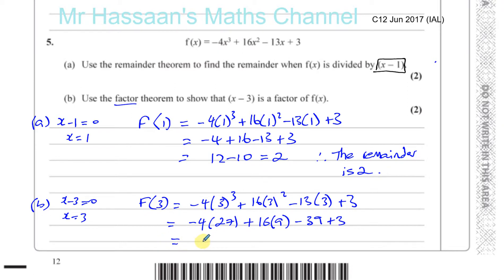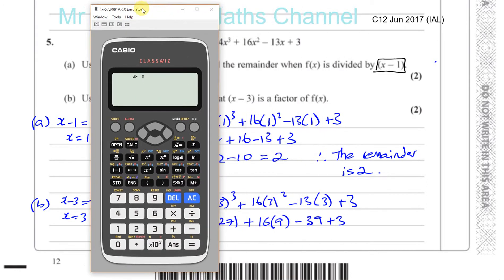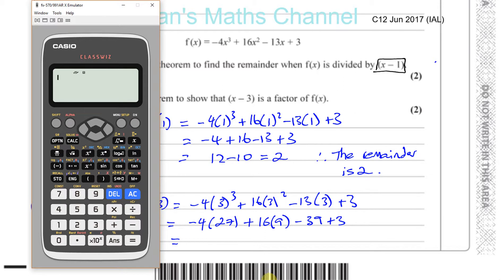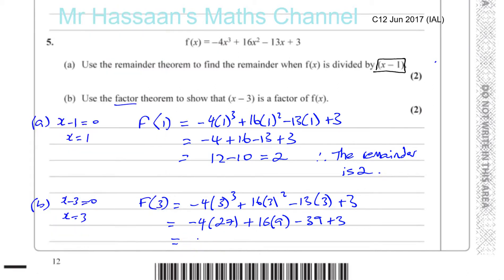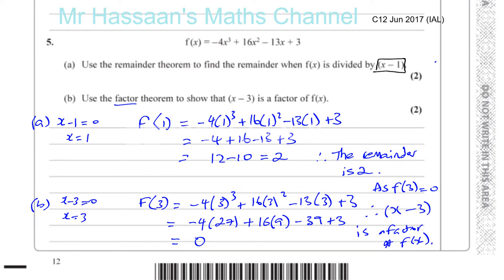Now we can just put this on a calculator if we wanted to, because we can use a calculator for this. So we have minus 4 times 27, plus 16 times 9, minus 39, and plus 3. And we should get 0, which we do. So therefore, as f(3) is equal to 0, therefore x minus 3 is a factor of f of x. That's part A and that's part B of that question done.